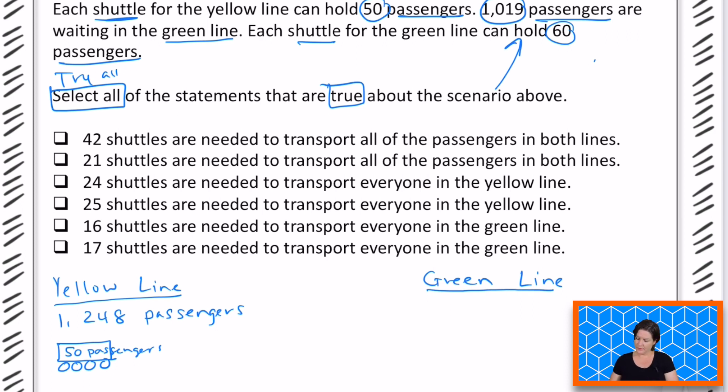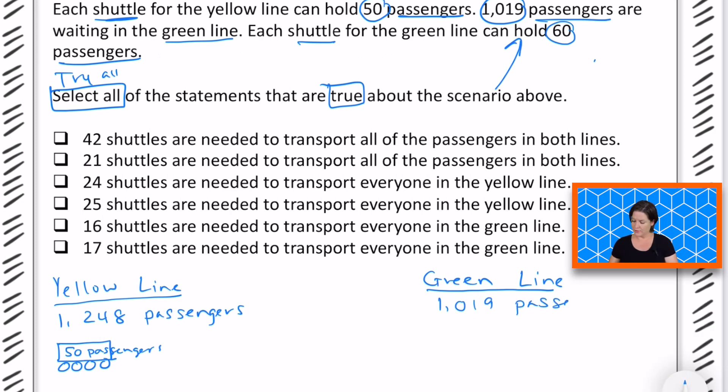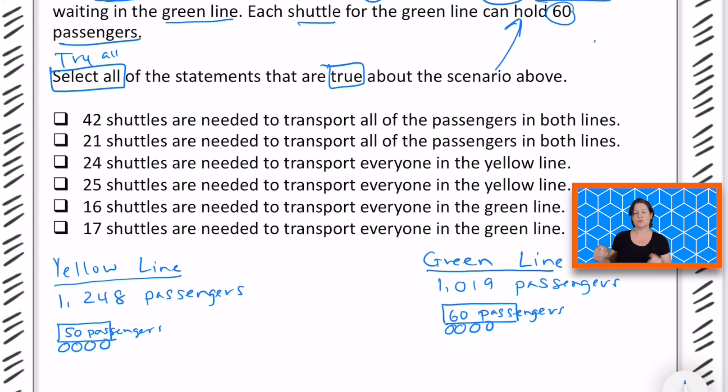The green line, we've got 1,019 passengers are waiting in the green line and each shuttle can hold 60 passengers. So these shuttles are a little bit bigger and we also have less people in the green line. So now we need to select all the statements that are true about this situation. This is definitely helping it to make sense to me. Let's go ahead and get an idea for what the statements are saying. The first one says 42 shuttles are needed to transport all of the passengers in both lines. Do you see how all of them say this? We're trying to figure out how many are needed to transport in both lines, in the yellow line, and in the green line. So basically what we need to do is figure out how many shuttles we'll need for the yellow line and how many shuttles we'll need for the green line. And we will definitely need to combine those in a little bit to see if that works there.